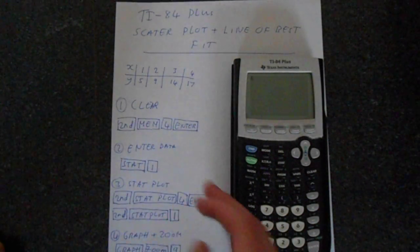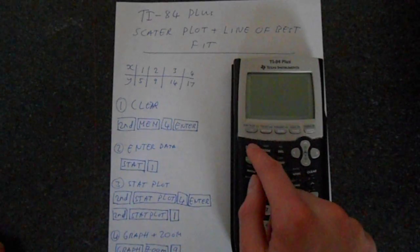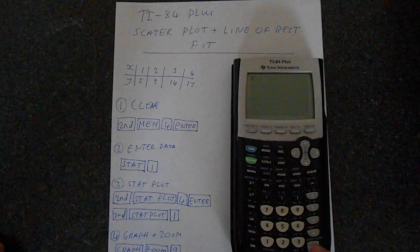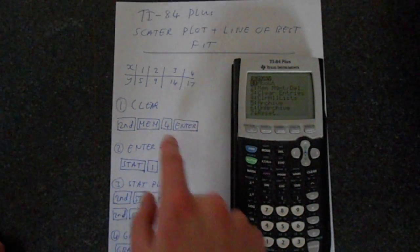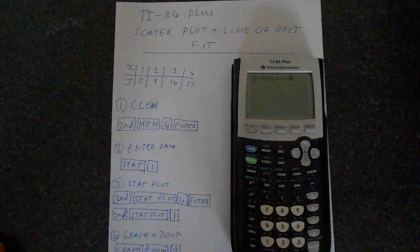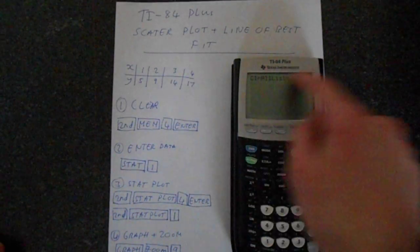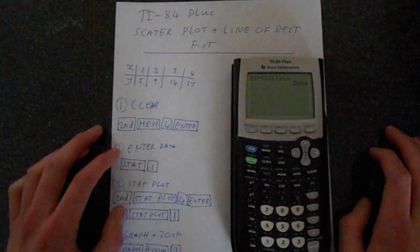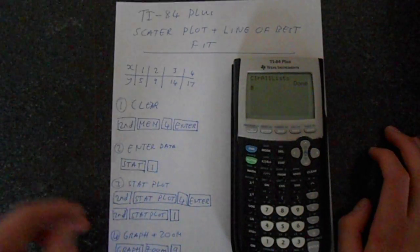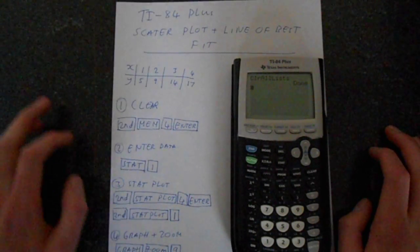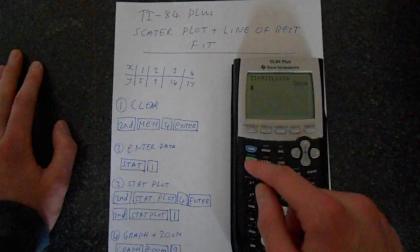So first step, we want to clear what's in the lists. If we go second function and then go to memory, then we press 4, that gets us to clear lists and then enter and that's done. So any lists are now deleted. You could do a full reset if you want to be fussy, but this is sufficient for our purposes.